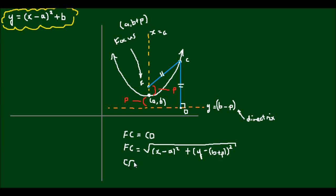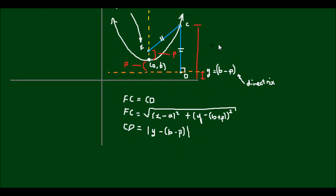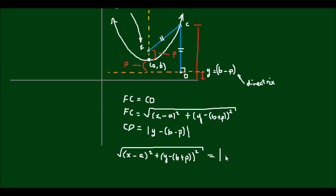The length cd is simply going to be the magnitude of y minus (b - p), since the y-coordinate of c is y and the y-coordinate of the directrix is b - p. So equating the two sides: the square root of (x - a)² + (y - (b + p))² is equal to the magnitude of y - (b - p).